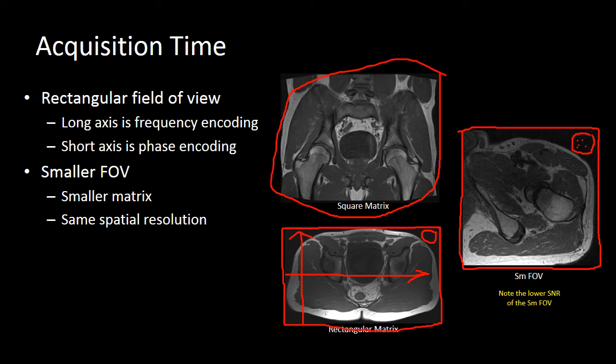Smaller field of view, smaller matrix, but the same spatial resolution will cause you to have more noise. Your long axis should always be your frequency-encoded direction, and your short axis should be the phase-encoded direction.